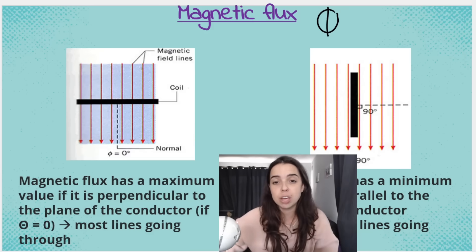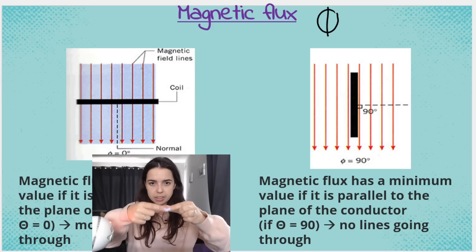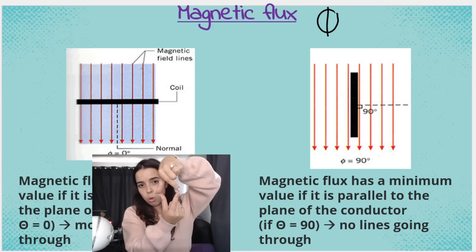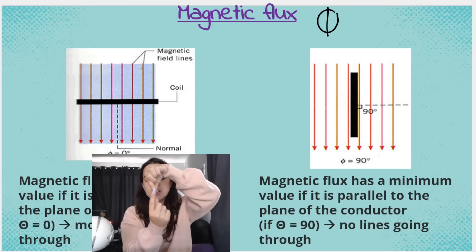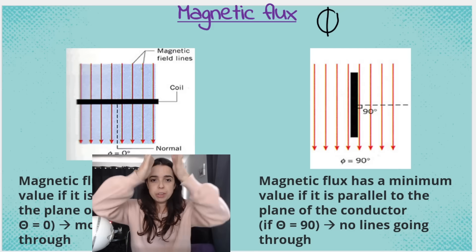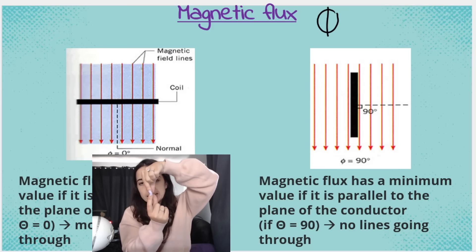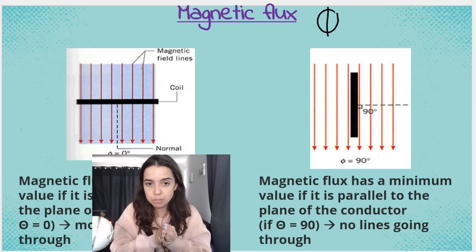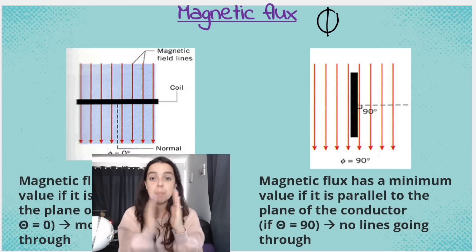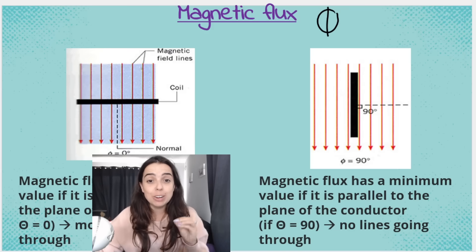However, in the situation on the right, the conductor is tilted on its side. It was flat before, but now we're tilting it so the hole is facing sideways. The magnetic field lines are still coming down, but no field lines can actually pass through the hole anymore — it's on its side and they can't go in. That's when we say magnetic flux has a minimum value: when the field lines are parallel to the plane of the conductor. The field lines go down like this and the conductor is like this — they're parallel. We'll go through the angles when we look at the formula in more detail.